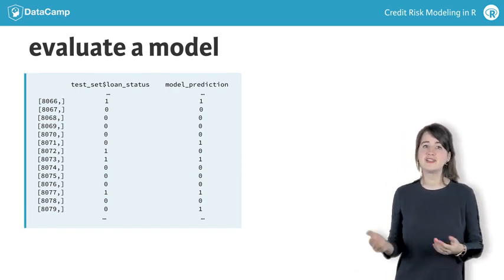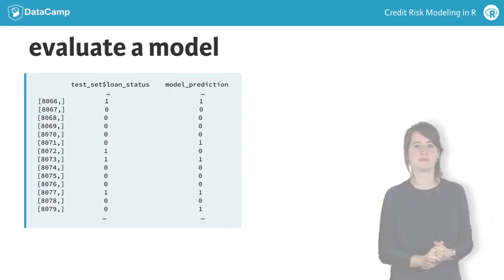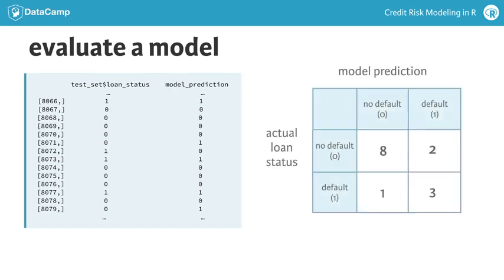Here, we use just 14 values to demonstrate the concept. A confusion matrix is a contingency table of correct and incorrect classifications. Correct classifications are on the diagonal of the confusion matrix. We see, for example, that eight non-defaulters were correctly classified as non-default, and three defaulters were correctly classified as defaulters.